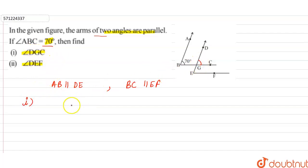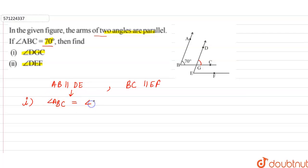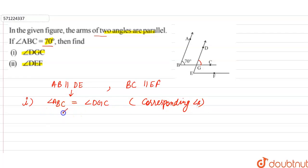We can observe that AB is parallel to DE, and BC is the transversal. Therefore, angle ABC is equal to angle DGC by corresponding angles. Since corresponding angles are equal, angle DGC is also equal to 70 degrees.